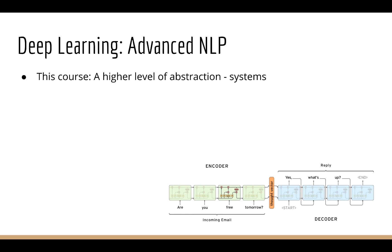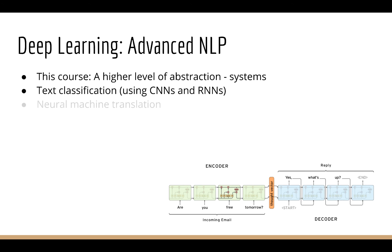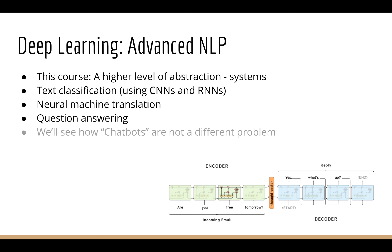In this course we're going to see several examples of such systems. We'll be looking at text classification, neural machine translation, and question answering. A lot of people are curious about chatbots, and as you'll learn in this course, this problem is actually no different from machine translation and question answering.